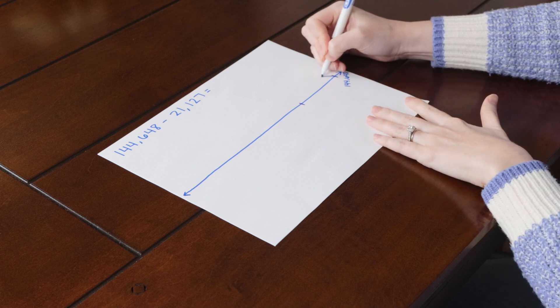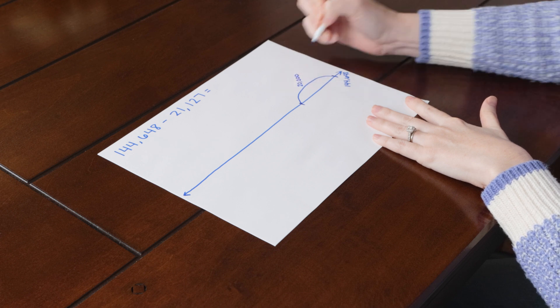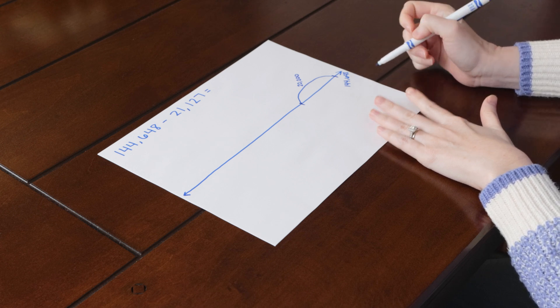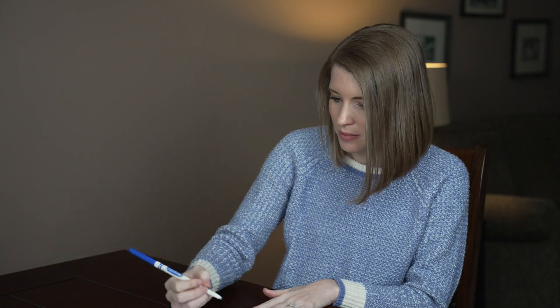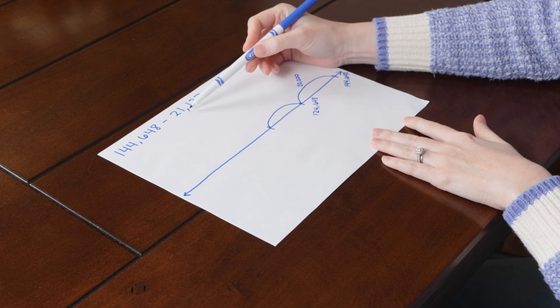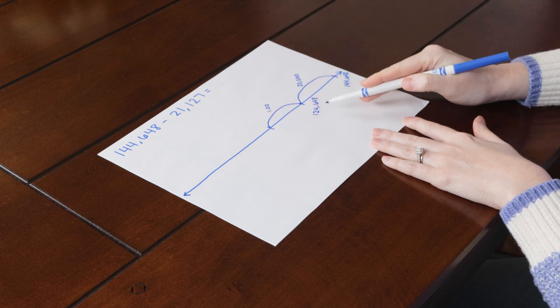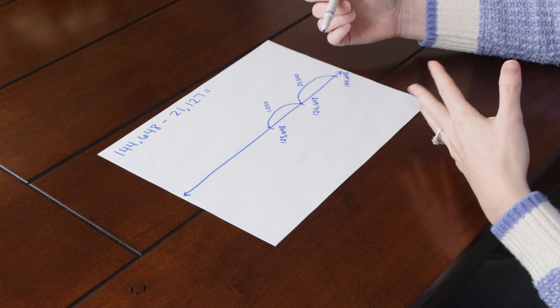First, we're going to subtract by the 10,000 place. I usually like to draw a little jump and write what the 10,000 place represents, so we're subtracting 20,000 and we'll take that away from the larger number. Next, we're going to subtract from the 1,000s place — I like to make the jump a little bit smaller each time because the place values are getting smaller — and we subtract just 1,000. We're going to repeat this process for the 100s place, the 10s place, and the ones place, making each jump a little bit smaller. It's a great discussion to have with students about place value as you're working.